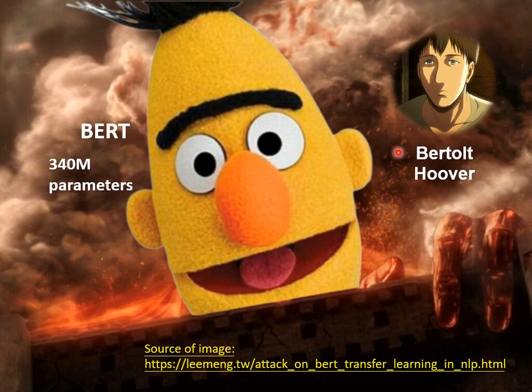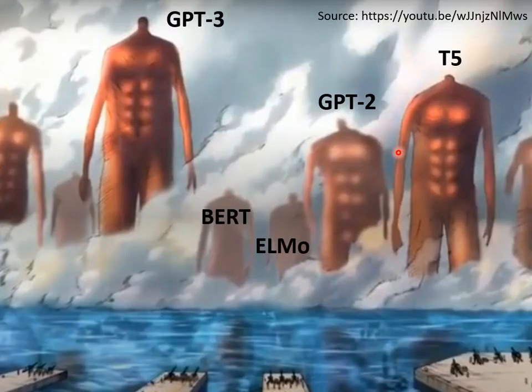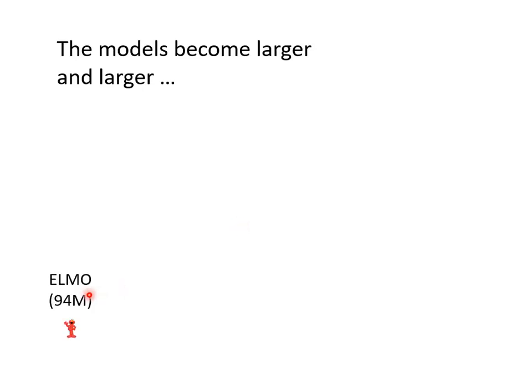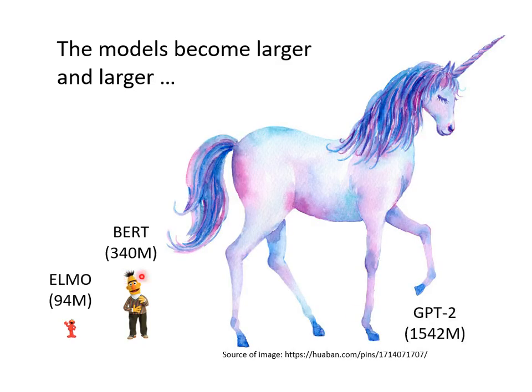You might think that BERT is already very big, but there are bigger models. This era is a time when lots of Titans are gushing from the ground. The earliest is ELMO with 94 million parameters. We use the height of these characters to represent the number of parameters. BERT is a little bigger with 340 million — almost a thousand times bigger than your homework model — but it's not the biggest. GPT-2 has 1,500 million parameters.